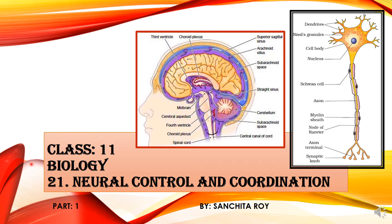We have been discussing about the different types of life processes existing in human beings. We have discussed about the respiratory system, the body fluid and circulation, the excretory system, and the muscular and skeletal system. Now, when these systems are functioning, how are they getting controlled and coordinated? They are controlled and coordinated by the neural control and coordination system present in the body. In this chapter, we are going to discuss how the different types of systems are controlled and coordinated to work together to perform a particular function.